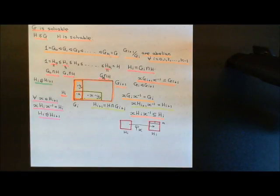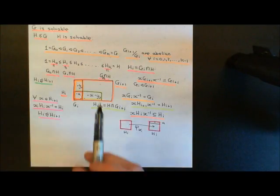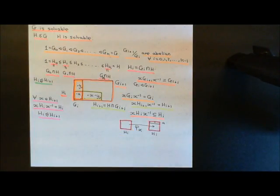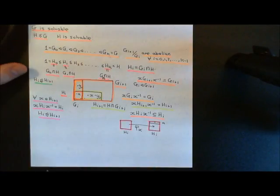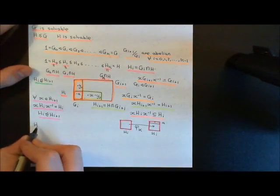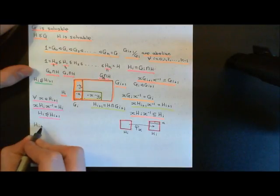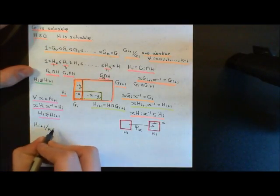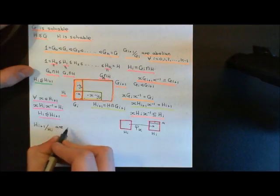What I now want to show is that if you take all of these quotient groups for this subnormal series that we've constructed here, they're always going to be abelian. The next thing I want to show is that if I take H_{i+1} and quotient it out by H_i, these are all going to be abelian.